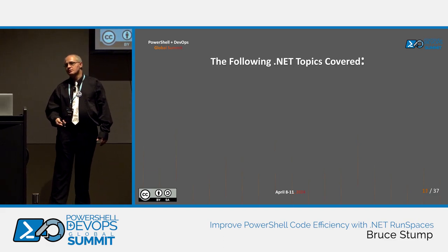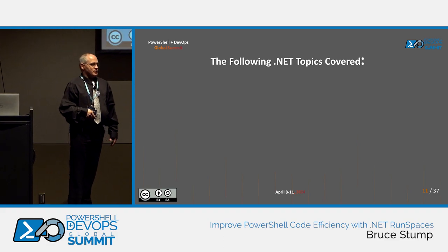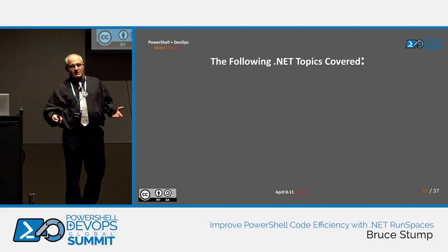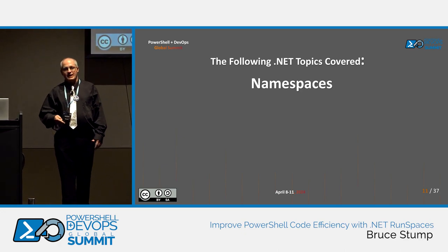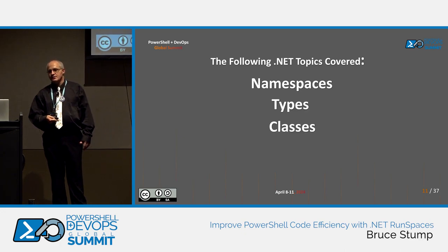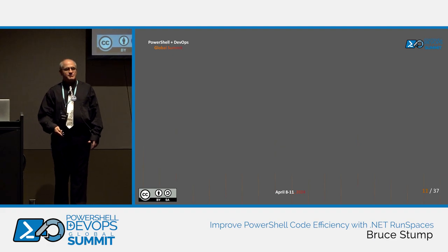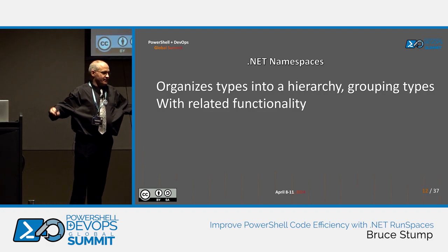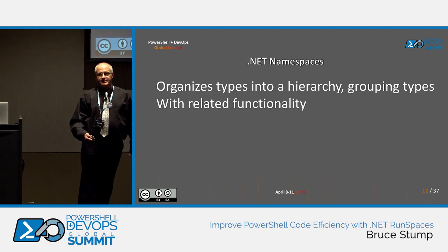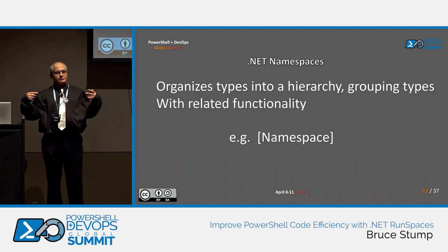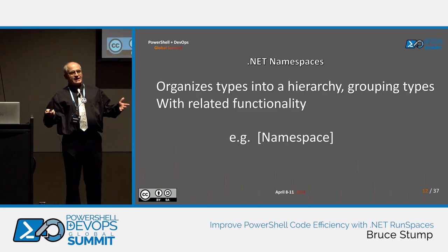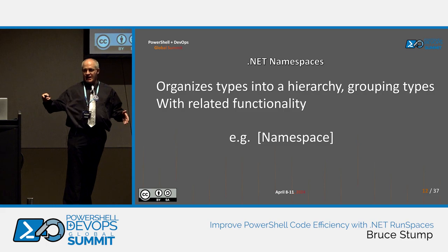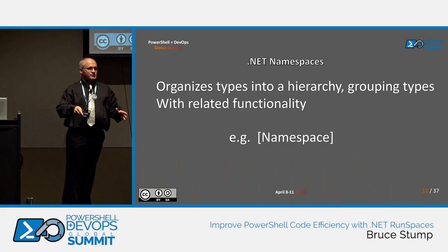Moving on to .NET and PowerShell. We're not going to cover everything in .NET — we could spend all day on it. Some of the top topics we'll cover are namespaces, types, classes, and assemblies. Namespaces I just think of as ways of organizing stuff — like a folder. In PowerShell you can put namespaces in brackets, but you'll need a type with it. It will be like namespace.type.